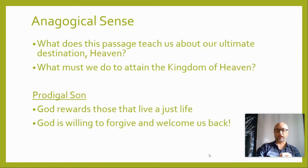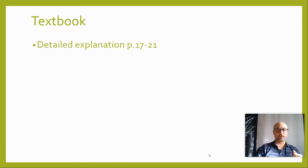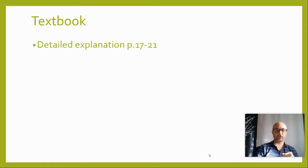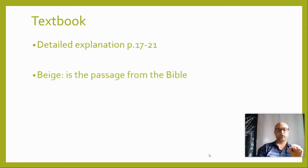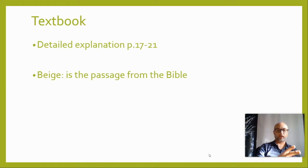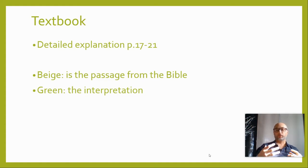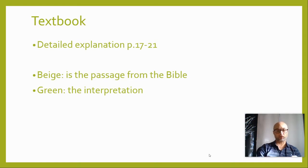We have a very powerful sacrament in the sacrament of reconciliation that allows us to reconcile and to return to God. In your textbook, you have a detailed explanation of these different senses of scripture on pages 17 to 21. They also give you more examples specifically using the first few chapters of the book of Genesis. The beige parts are the actual scripture in the Bible, and the green parts are the interpretation of those passages through the literal sense, the anagogical sense, the moral sense, and the allegorical sense.